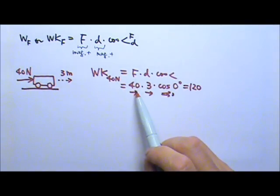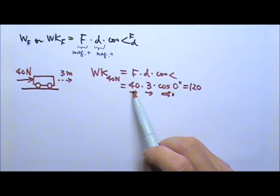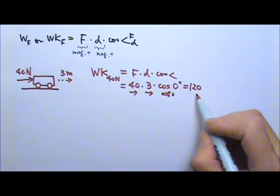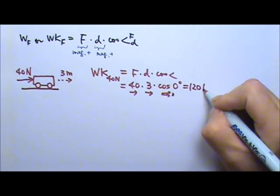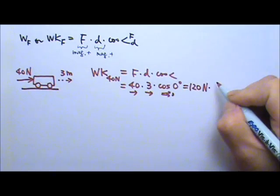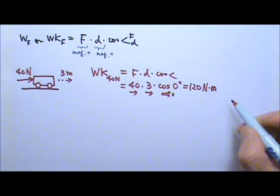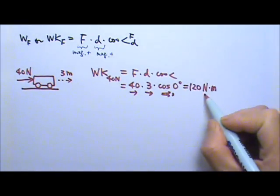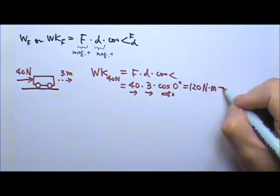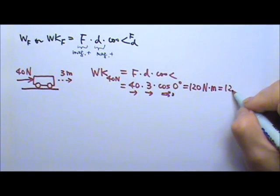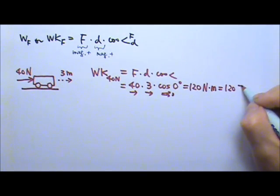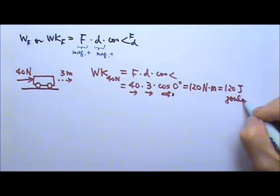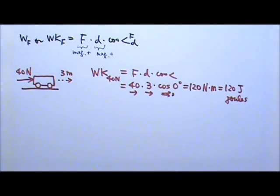Since we multiplied 40N by 3 meters, we get 120 N·m. We give that unit a special name — it's called joules. So the answer is 120 joules.